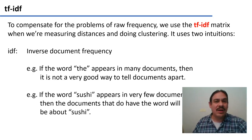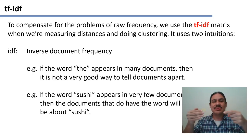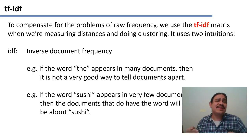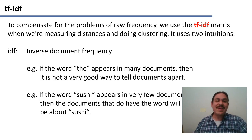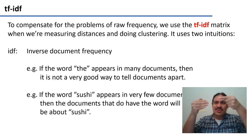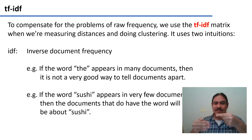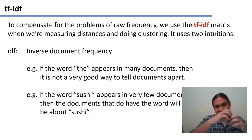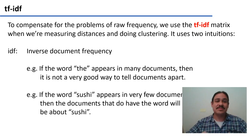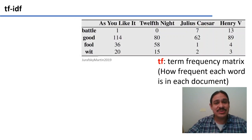If we have the word 'the' and we see it in every single document, it means it's not going to be a good way to tell the documents apart, because they all have it. On the other hand, if the word 'sushi' appears only in a few documents, then we know that this word is going to be a good feature for distinguishing that set of documents from the rest. So let's turn these intuitions into numbers that the computer can understand.